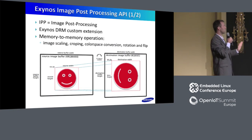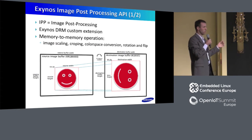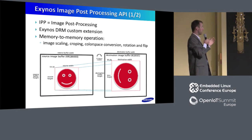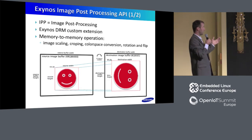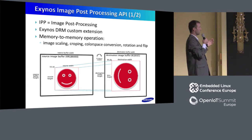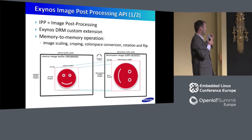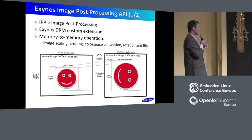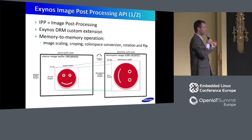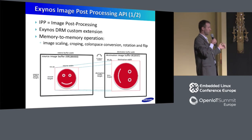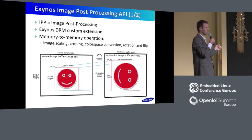Now let's switch to the Exynos Image Processing API. This API gave applications access to various hardware modules that implement memory-to-memory operations, like image scaling, cropping, color space conversion, rotation, and flip around vertical or horizontal axes. This was initially implemented as an Exynos DRM custom extension. Exynos DRM is a DRM driver for display hardware available in various Samsung SOCs.